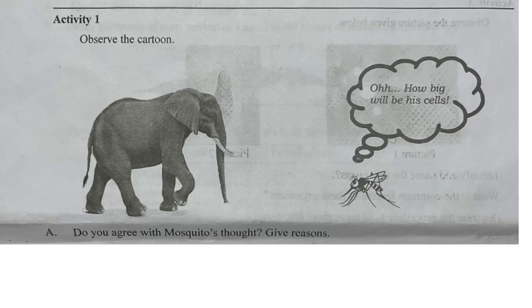Activity 1: Observe the cartoon. The first term is elephant, the second term is mosquito. The question asks: how big will his cells be? Do you agree with the mosquito? Give reasons.